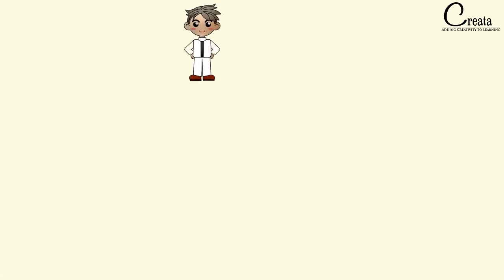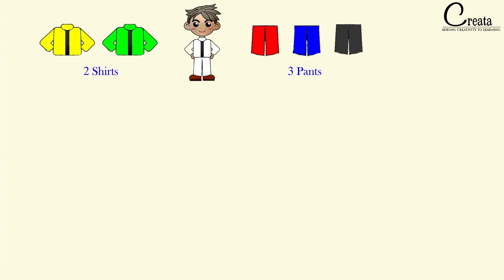The example is: suppose a person wants to go out, and he is having 3 pants and 2 shirts. The question is: what are the various ways in which the person can dress up using the 3 pants and 2 shirts? Let's check it out.